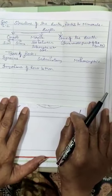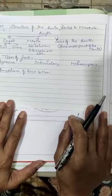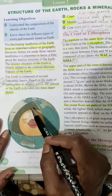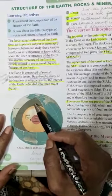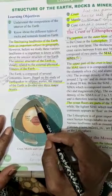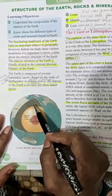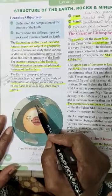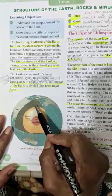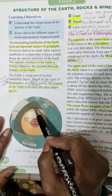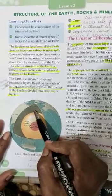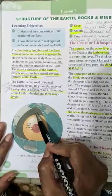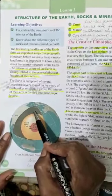Now we will see about the Earth. The landforms of the Earth form an important subject in geography. The interior structure of the Earth is closely related to the external physical features of the Earth. The Earth is composed of several symmetric layers. Based on the study of earthquakes and seismic waves, the interior of the Earth is divided into 3.